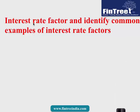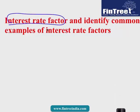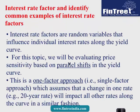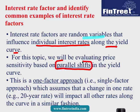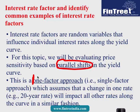So first learning outcome is interest rate factor and common examples of interest rate factor. Interest rate factors are random variables which influence individual interest rates along the yield curve. For this topic, the factor that would be causing change in the yield curve would be a parallel shift, and since we are going to assume that the only variable that is changing the interest rate is parallel shift, this reading is being referred to as one factor approach. So the name of the reading is single factor.